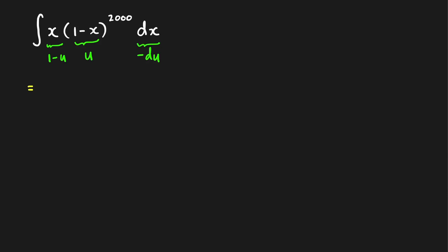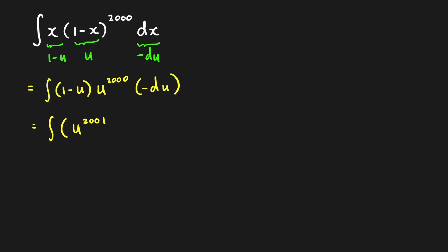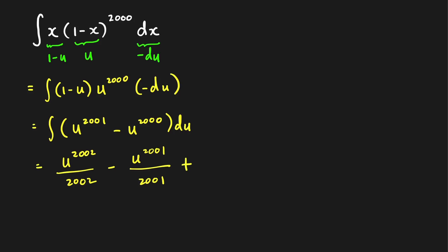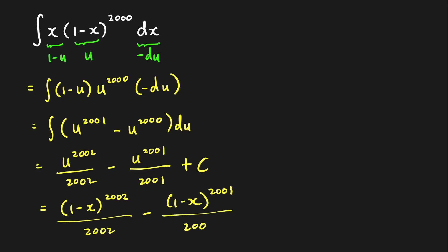Therefore, we can write our integral as the integral of (1 minus u) times u raised to 2000 times negative du, which equals the integral of u raised to 2001 minus u raised to 2000 du. Applying the power rule, we get u raised to 2002 over 2002 minus u raised to 2001 over 2001 plus C. Substituting back, this is (1 minus x) raised to 2002 over 2002 minus (1 minus x) raised to 2001 over 2001 plus C.